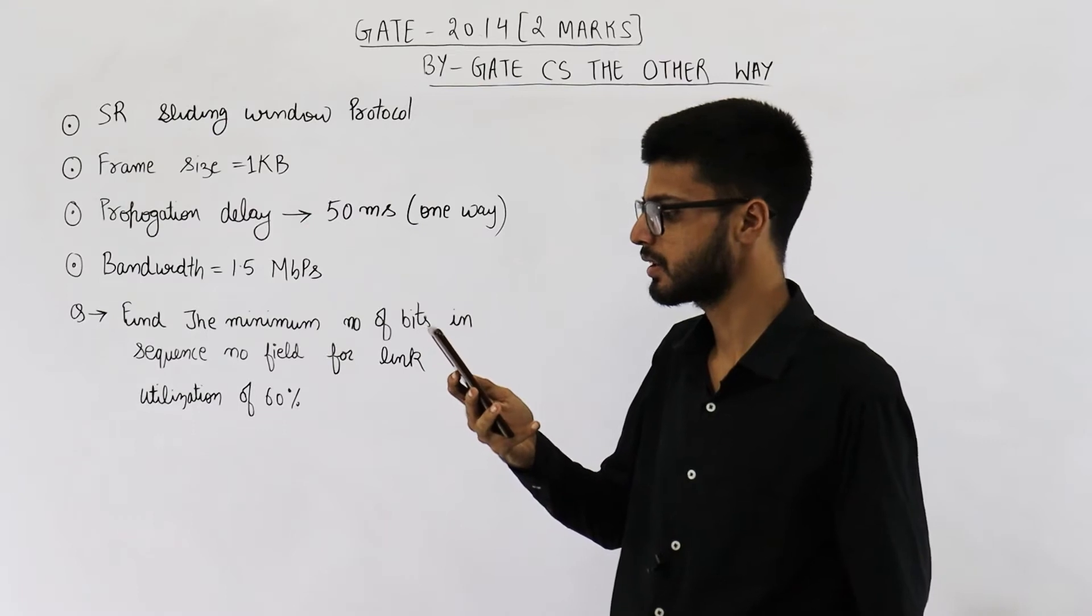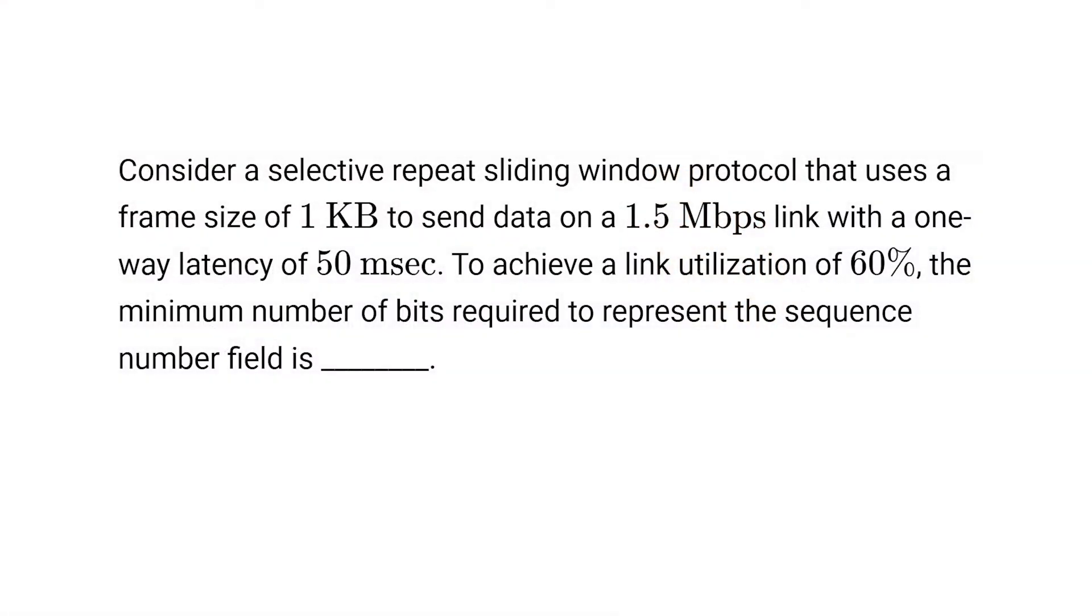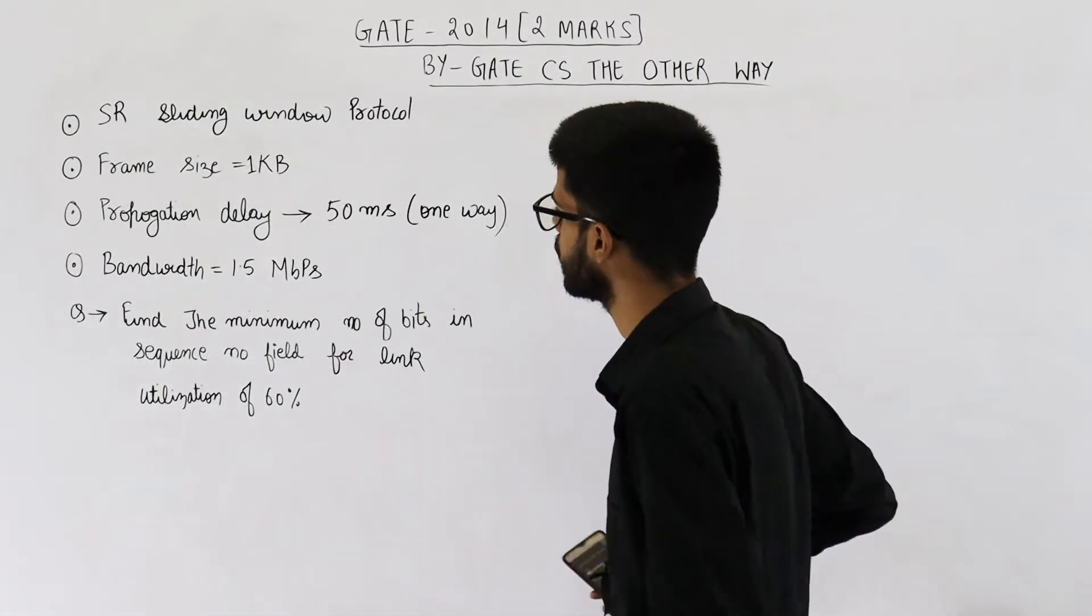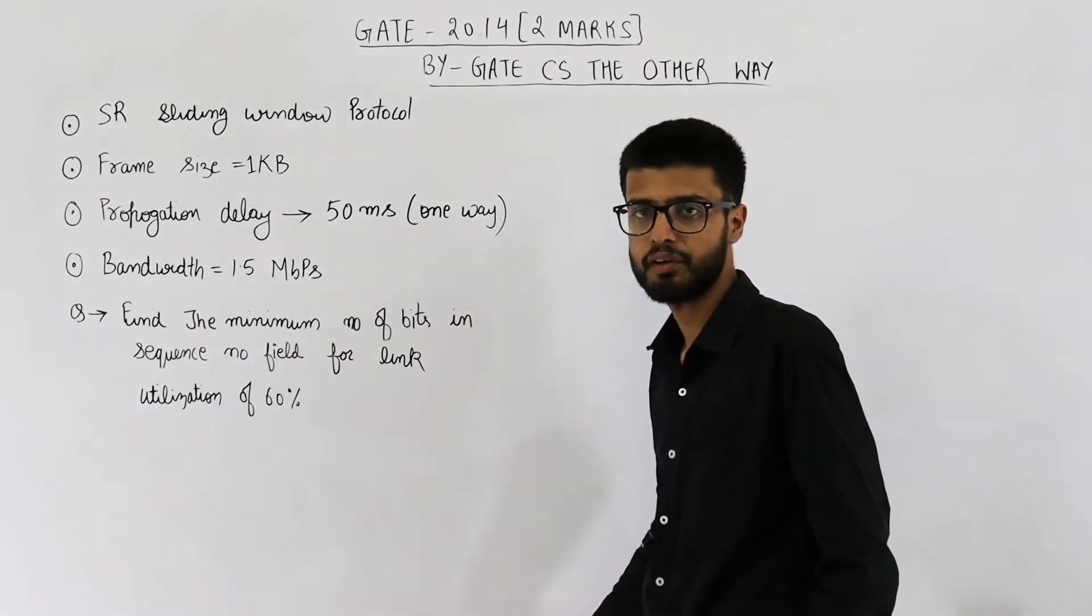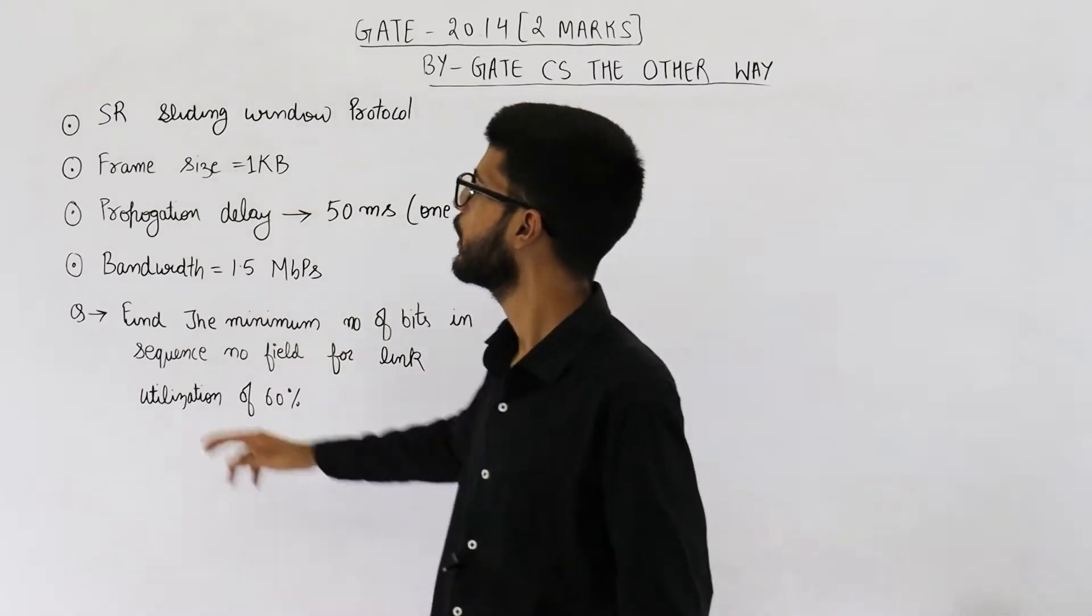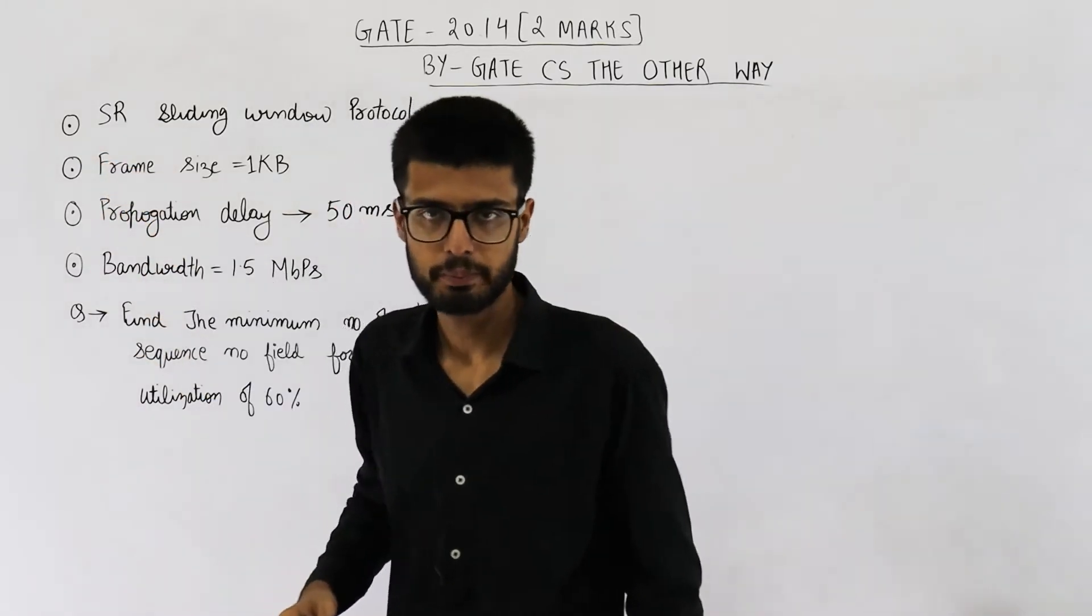They're saying consider a selective repeat sliding window protocol that uses a frame size of 1 KB to send data on a 1.5 megabits per second link with a one-way propagation latency of 50 milliseconds. To achieve a link utilization of 60%, the minimum number of bits required to represent the sequence number field is. So we want 60% efficiency in SR, that is selective repeat protocol.